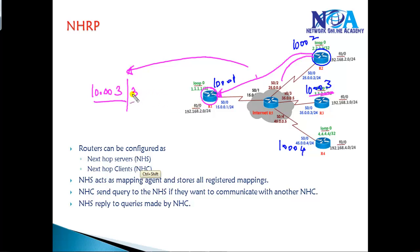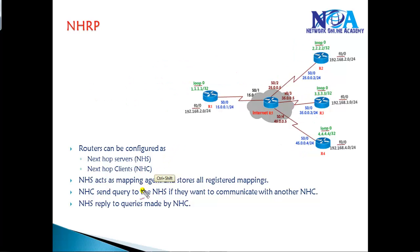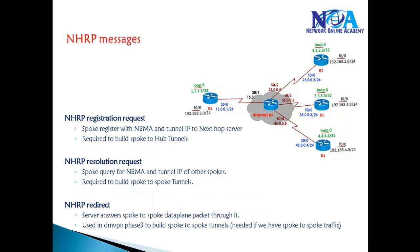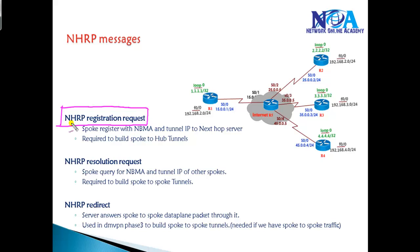The server maintains that information and responds with the NBMA address needed to reach 10.0.0.3, allowing the dynamic VPN to be established. Every client sends a query message when it wants to communicate with another Next Hop Client, and the Next Hop Server replies to those queries made by the spokes. This is similar to a hub-and-spoke model where the Next Hop Server acts as the hub and all remaining routers are spokes. NHRP uses different message types for this information exchange.